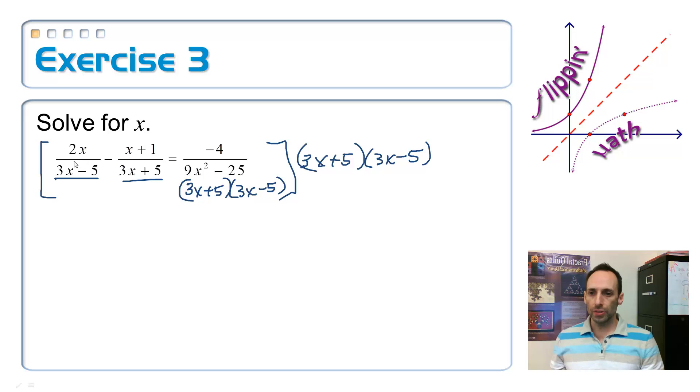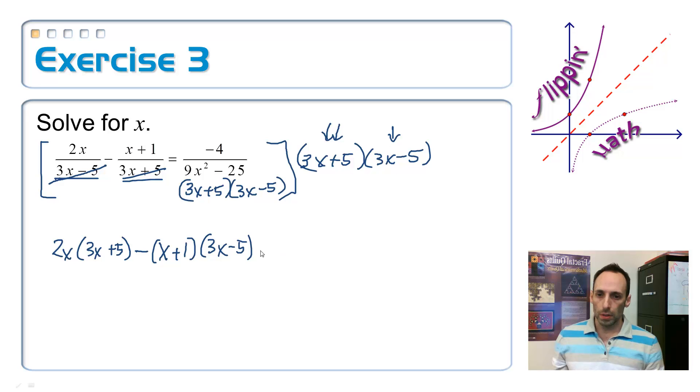So when I cancel stuff out on the first one, the 3x minus 5 will cancel out with this 3x minus 5, leaving 3x plus 5. So 2x times 3x plus 5. Now, don't forget about the minus sign that's right there. So minus. And now I'm going to have up top x plus 1. This time the 3x plus 5 will cancel out with this one, leaving me with 3x minus 5. equals, all of this will cancel out with all of that, and just leave me with negative 4. Look at that, no fractions.